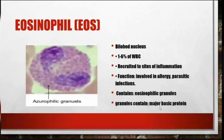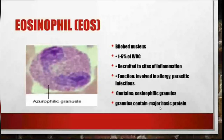Eosinophils have a bilobed nucleus and constitute 1 to 6 percent of WBCs. They are recruited to the sites of inflammation and are involved in allergy and parasitic infection. They contain eosinophilic granules, and those granules contain major basic protein.